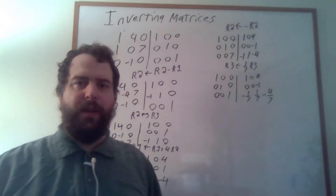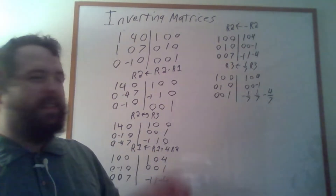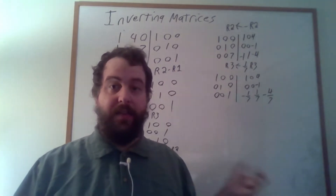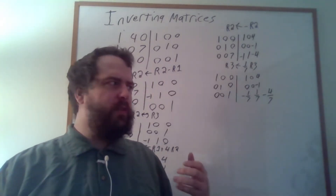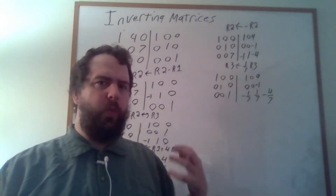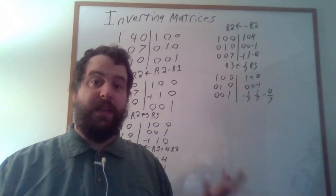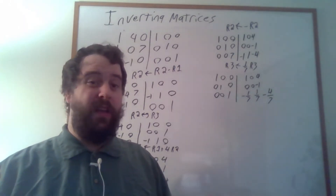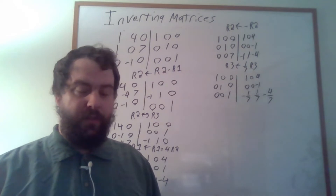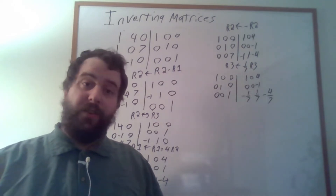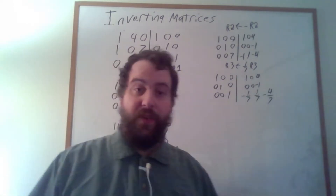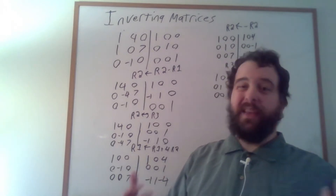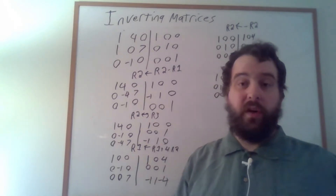Unfortunately, this is a very algorithmic way of calculating the inverse of a matrix. What if we wanted to work mathematically with the inverse — what if we wanted a formula for it? Well it turns out there is a formula, a fairly nice one, and this formula comes out of what's called Cramer's rule.